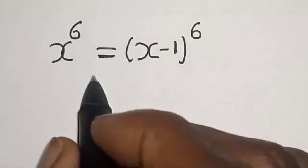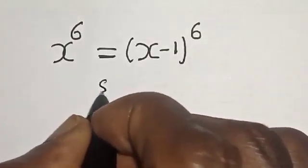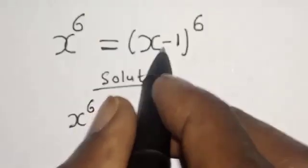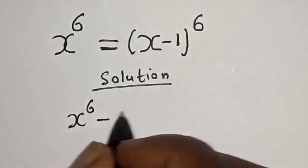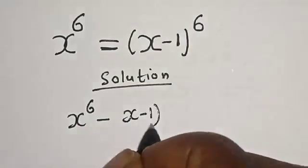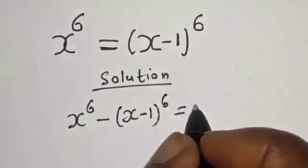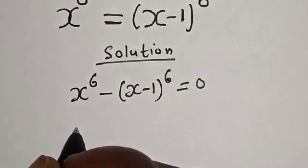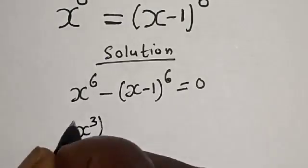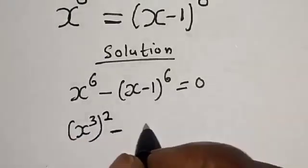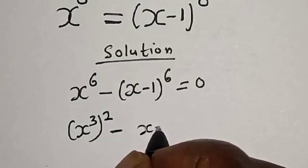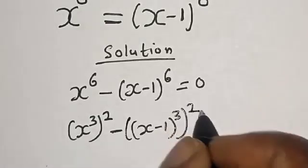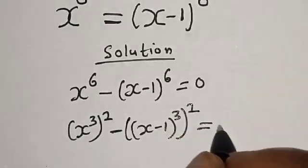But before we proceed, please don't forget to like, share, comment and subscribe. Solution: x raised to power 6 comes to this side and becomes minus x minus 1 raised to power of 6, is equal to 0. Then x raised to power 6 can be written as x raised to power 3, squared.